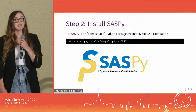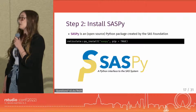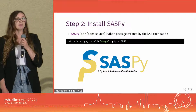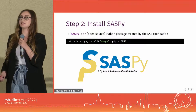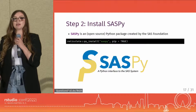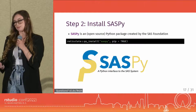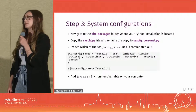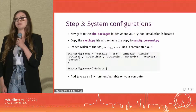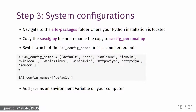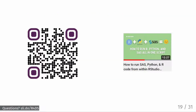Step two of this three-step recipe, assuming you have all of those required ingredients from step one, is to install saspy, which is a Python package that works very similarly to how reticulate works. Just like reticulate is an R interface to Python, saspy is a Python interface to SAS. The third and final step is to perform a couple of system configurations. There's a lot of detail involved, so I won't go over it today, but there is a video on my YouTube channel that explains all of the steps and includes an example of combining these three languages in the same script using saspy.